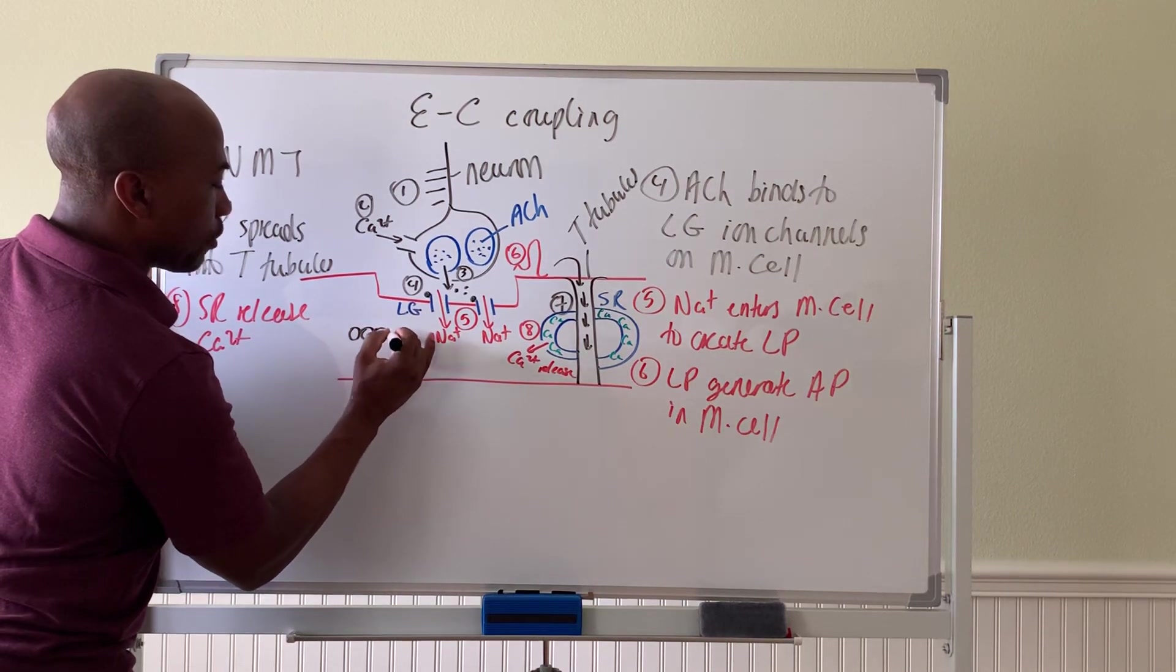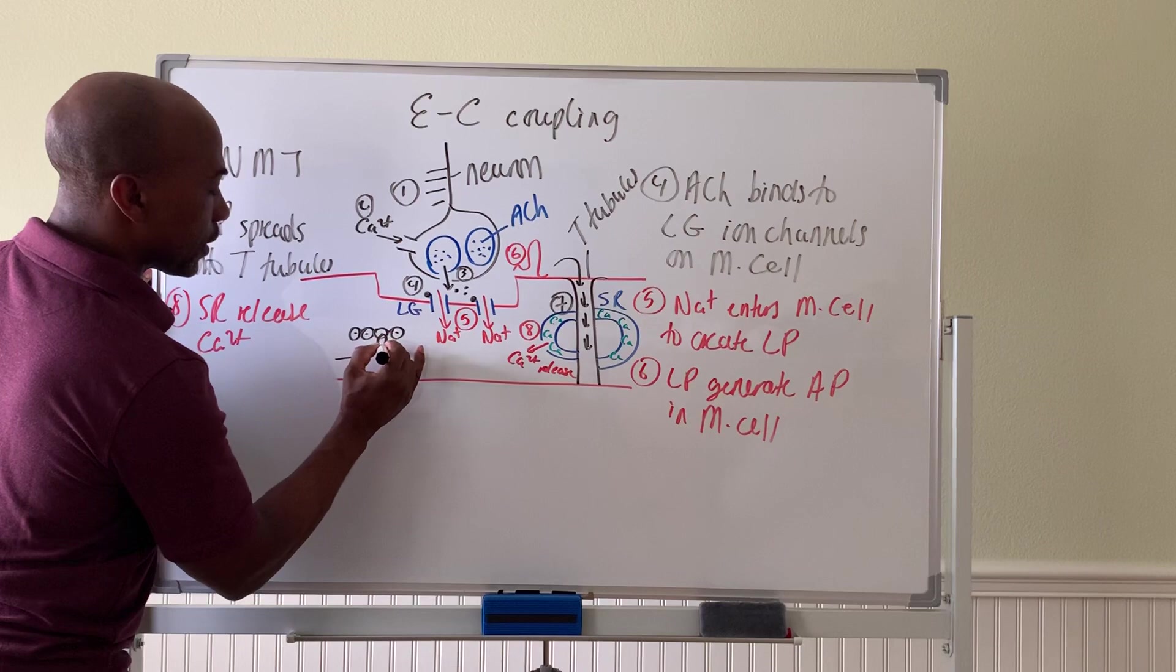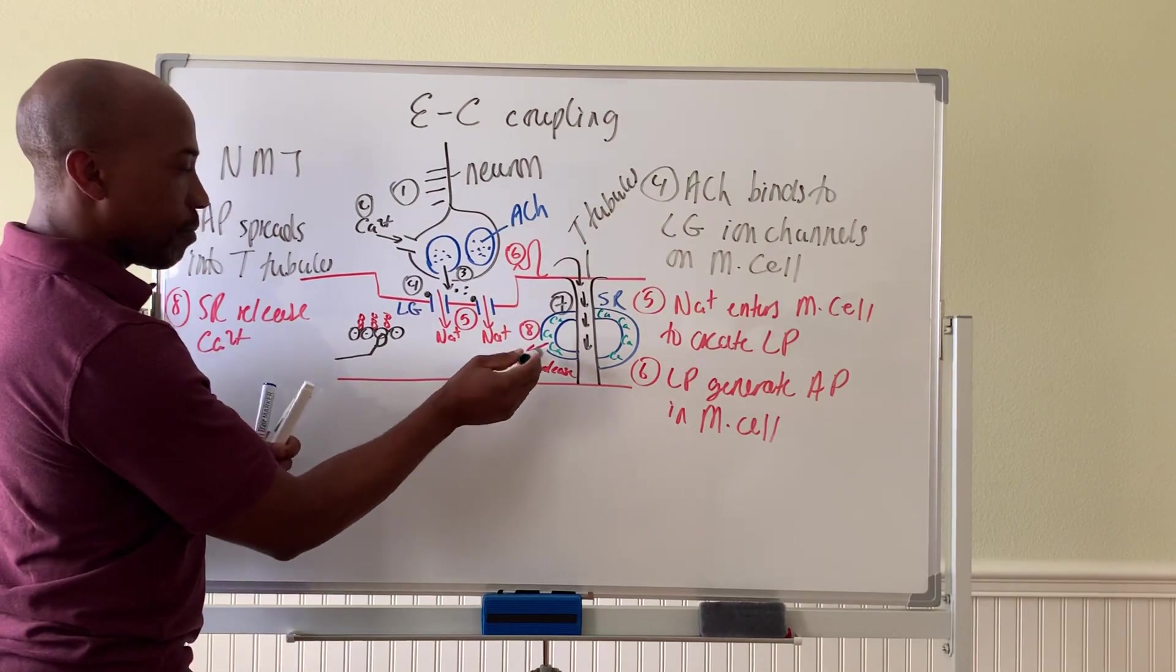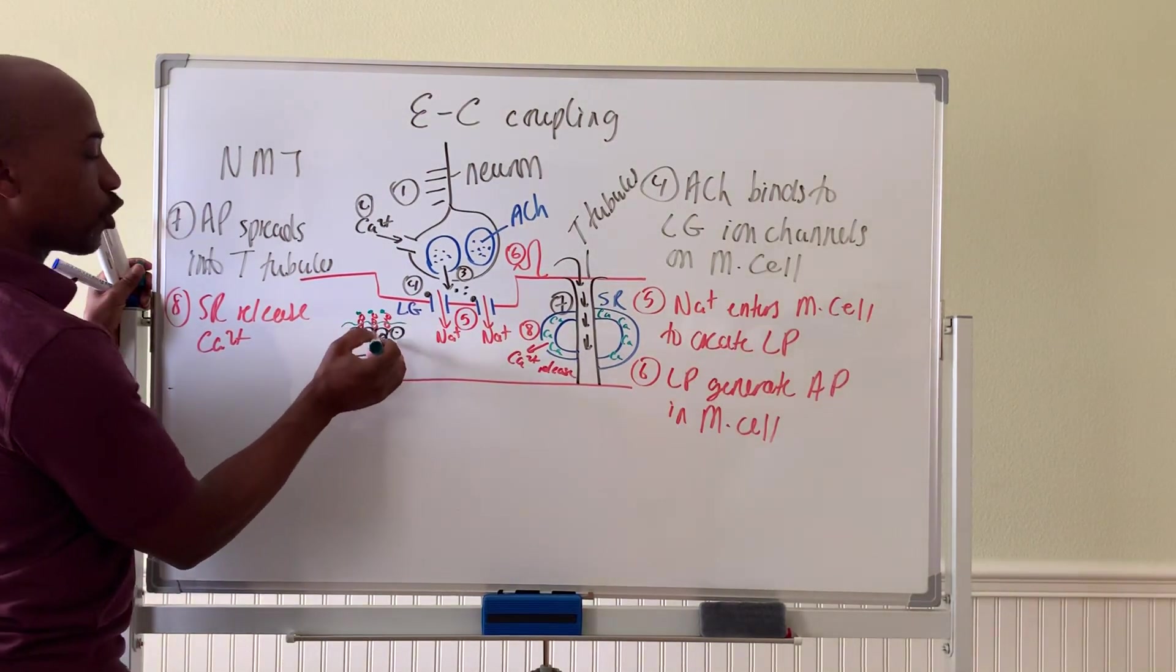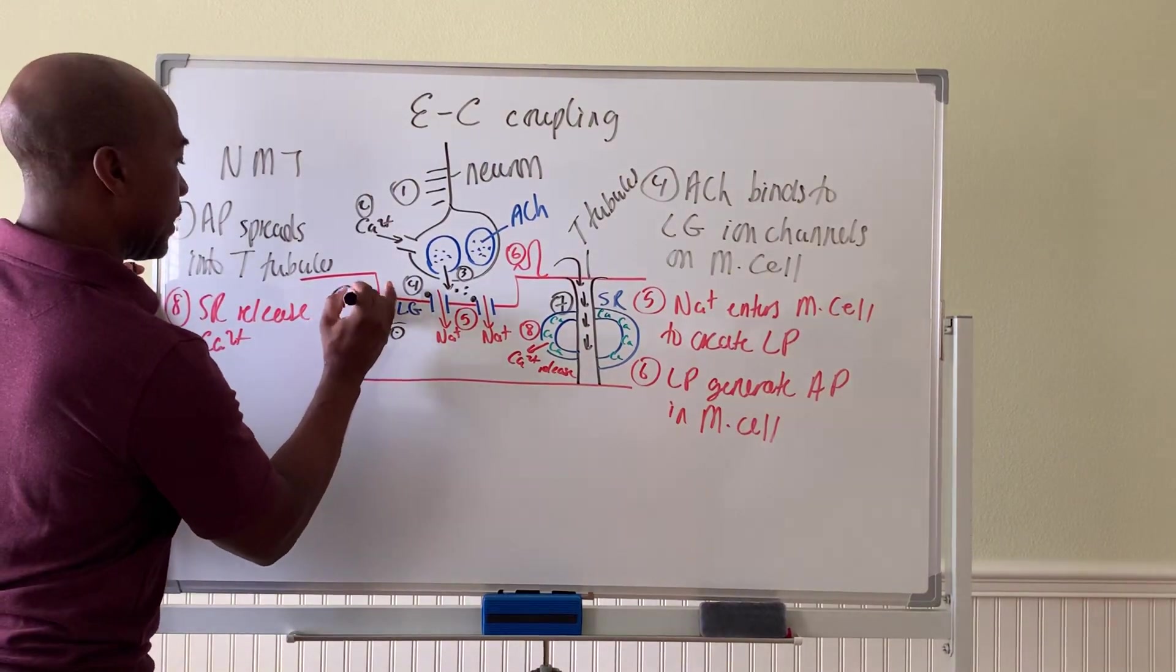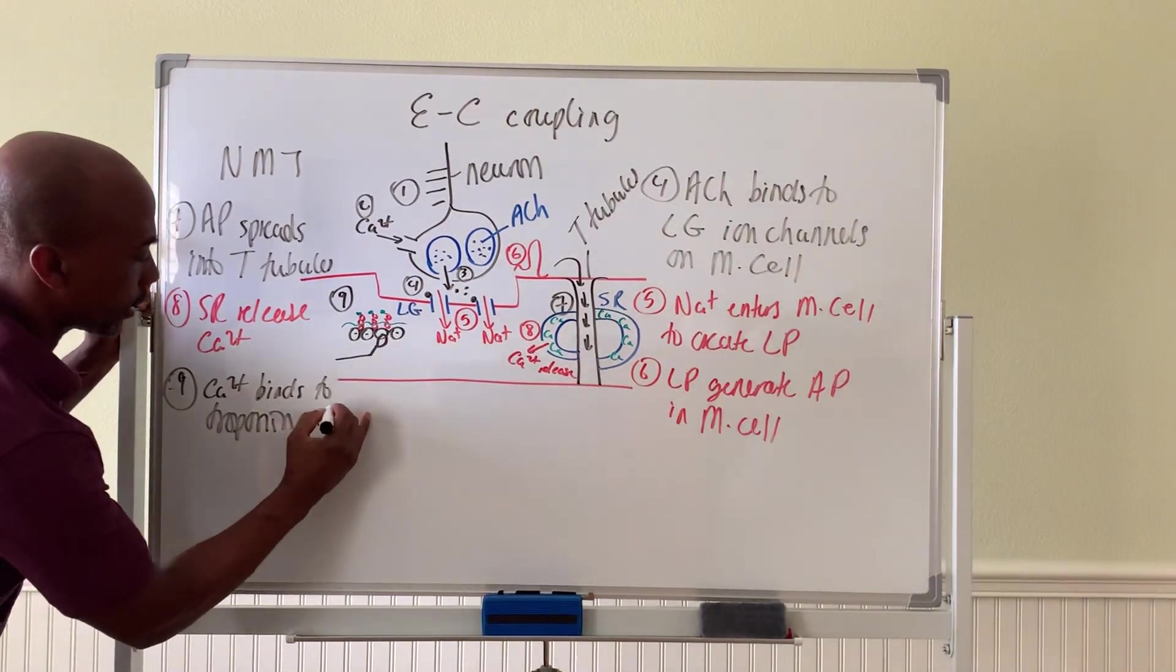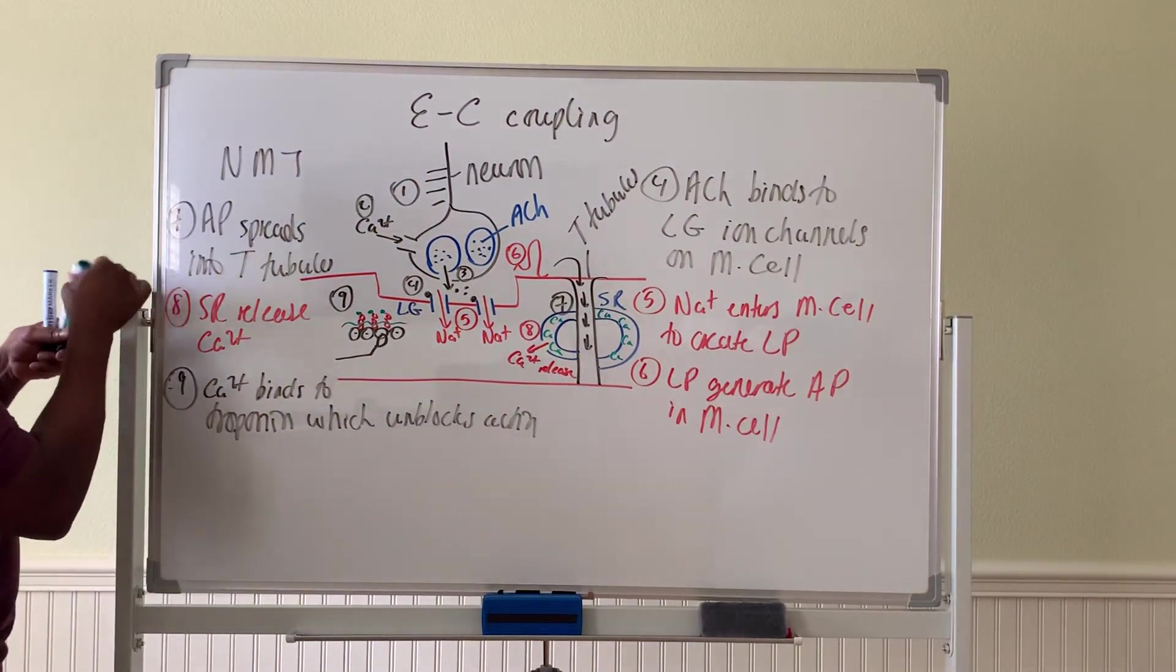And then once the calcium is released, then if you recall, remember that your actin molecules can only bind to myosin if the troponin is there attached to calcium. So now the calcium that's released from the SR would bind to troponin, which will unblock actin to allow for your crossbridge to form. And there you begin your crossbridge cycle. So that's step nine. Step nine is calcium binds to troponin.